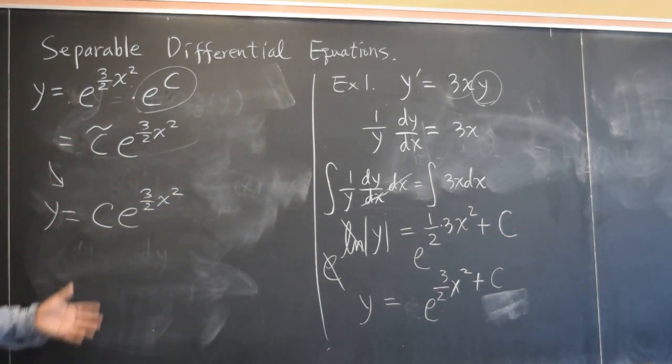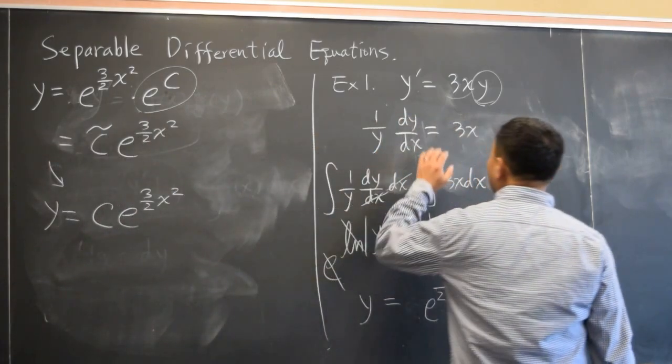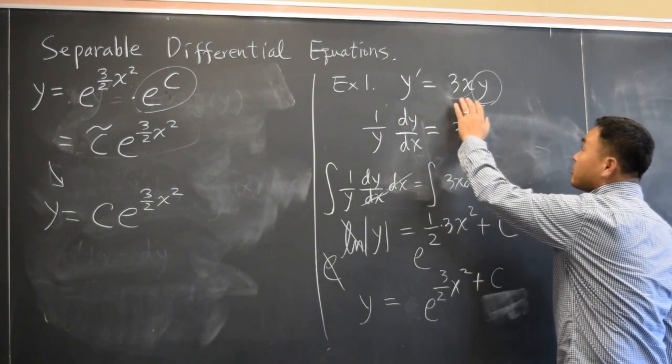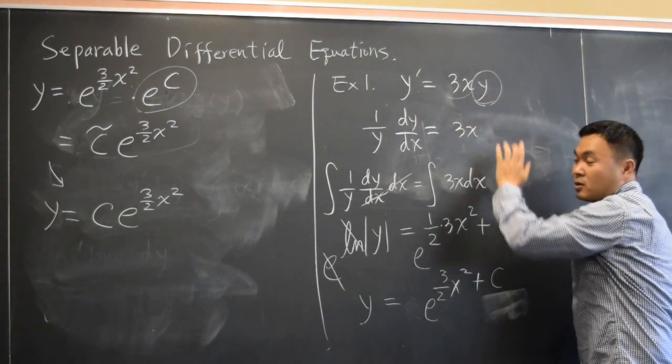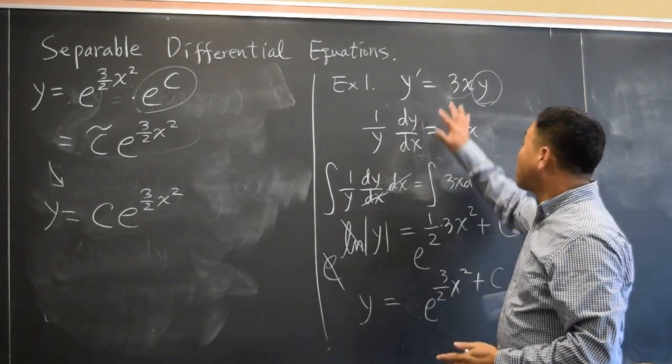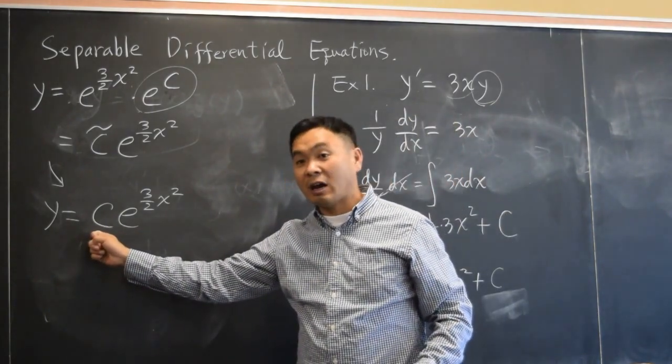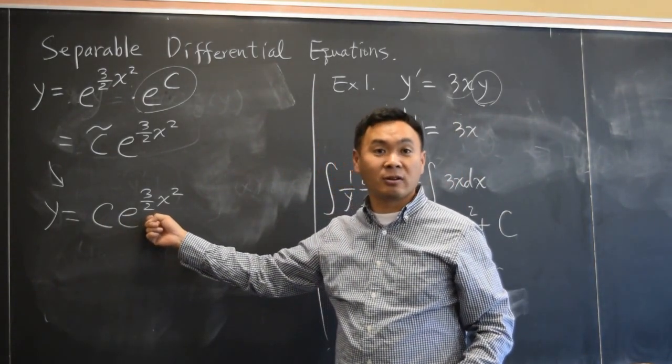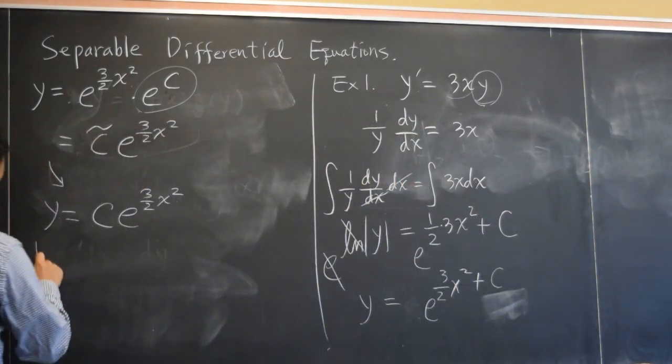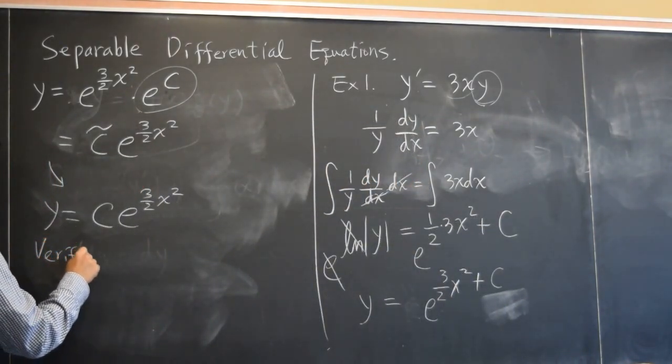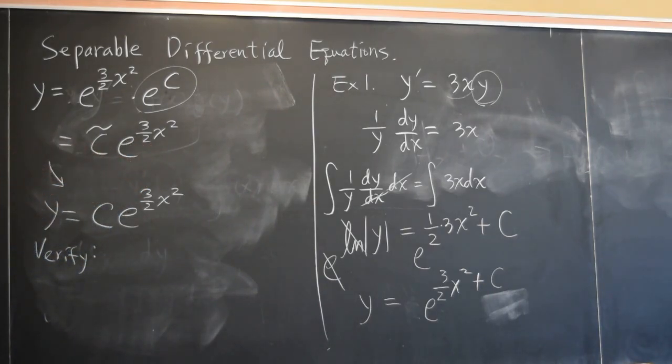So the result that we have here is really saying the following: if we want to find a function whose derivative is same as 3x times the function itself, all such functions that satisfy this must be of this form. It must be some constant times this type of function. Now, how do we verify that this answer is right? Just plug them into the original equation and see if it works, right?